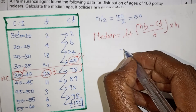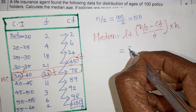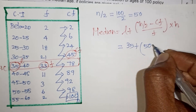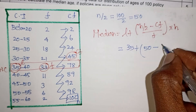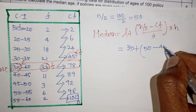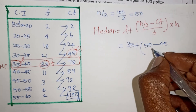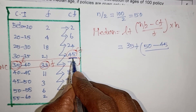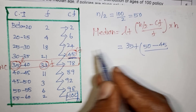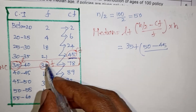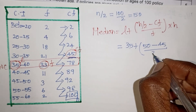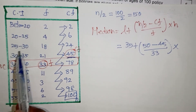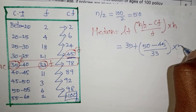Median equals 35. N by 2 is 50 divided by... actually n is 100 so n by 2 is 50. CF is 45. We select the class where cumulative frequency first exceeds 50. F value is 33. Class size h: the interval from 25 to 35 gives h equals 5.